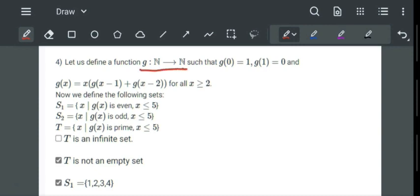Let us define a function g from N to N such that g of 0 value is given, g of 1 value is given, and the general value of g of x is given. So in all these sets which are asked, we will tell that x is less than or equal to 5.